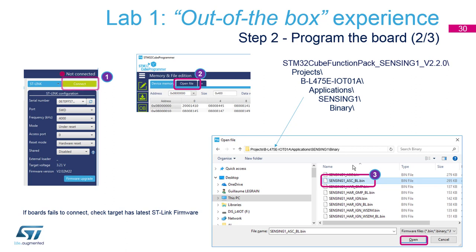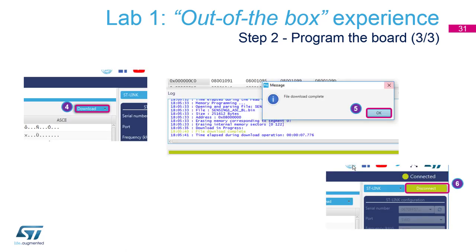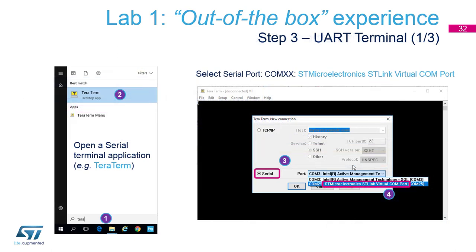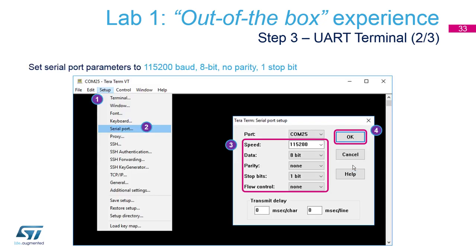We'll be using the ASC_BL.bin file. Open it, program, download file — download complete. Once your board is programmed, disconnect Cube Programmer and open a serial terminal application such as Tera Term. Create a new connection to the ST-Link virtual COM port and change the baud rate to 115200.